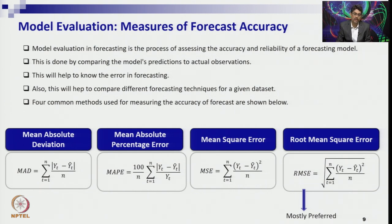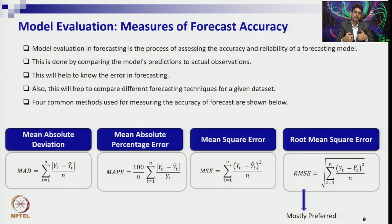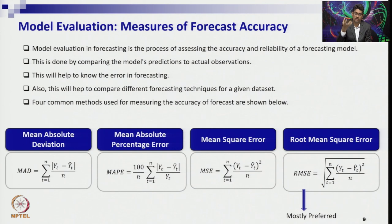For example, in regression analysis or causal models, we calculate how strong the relationship is between a dependent variable and an independent variable. That calculation is called the coefficient of determination, or R-squared — which is the square of the correlation coefficient. Higher R-squared means a better regression relationship. The same logic needs to be applied to time series data.